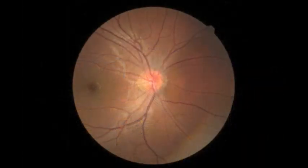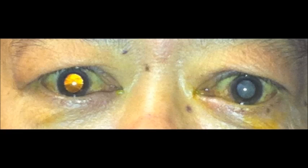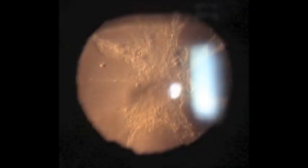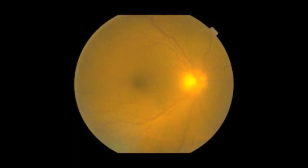However, opacities in the ocular media such as corneal scars, cataracts or vitreous hemorrhages can degrade the quality of the image, thus making it difficult to make a diagnosis.